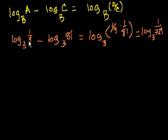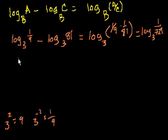So 3 to what power is equal to 1/9? Well, 3 squared is equal to 9, so we know that if 3 squared is equal to 9, then we know that 3 to the negative 2 is equal to 1/9. The negative just inverts it. So this is equal to negative 2. And then 3 to what power is equal to 81? Let's see, 3 to the 3rd power is 27, so 3 to the 4th power. So we have minus 2 minus 4 is equal to minus 6.